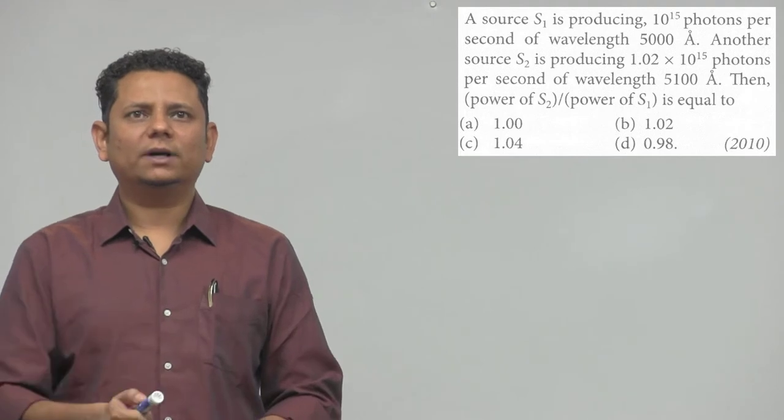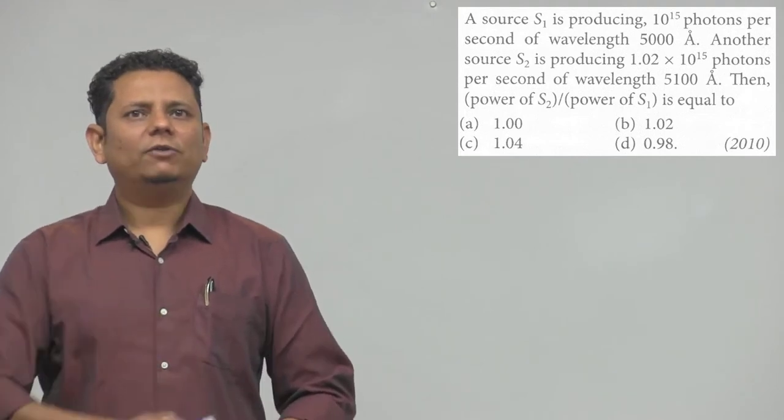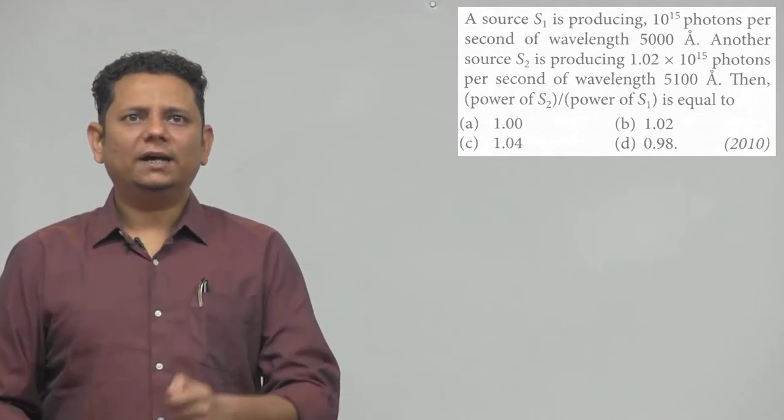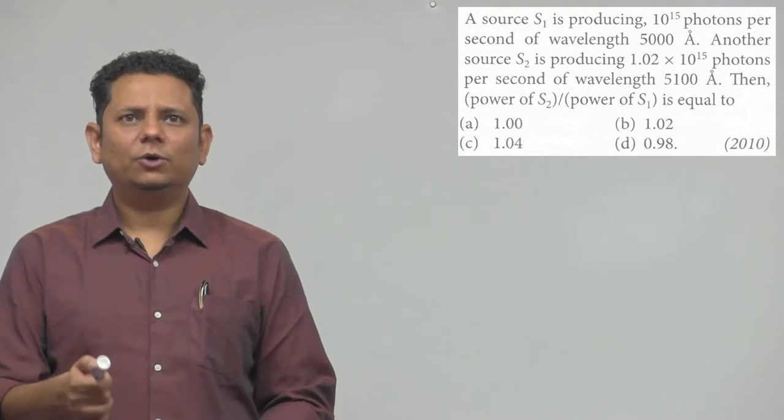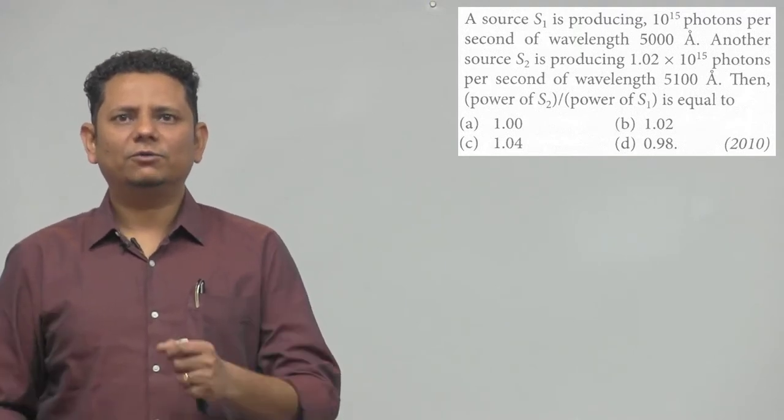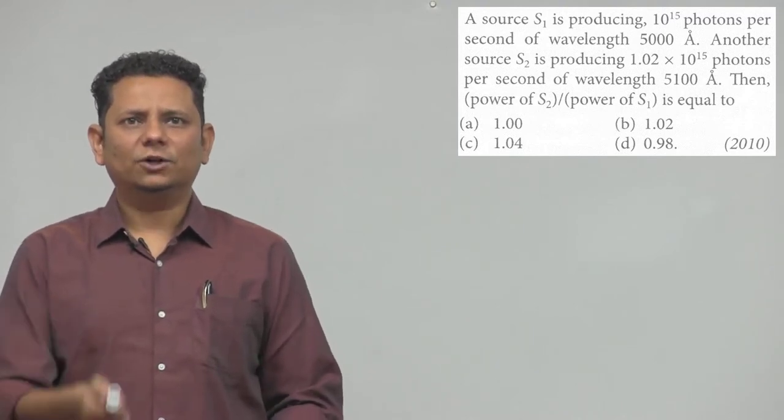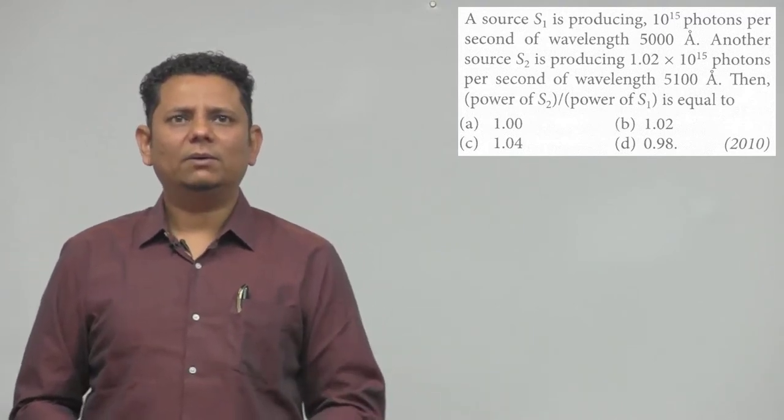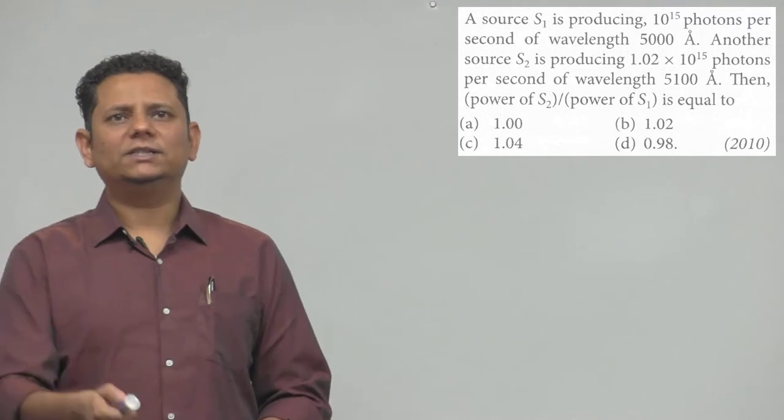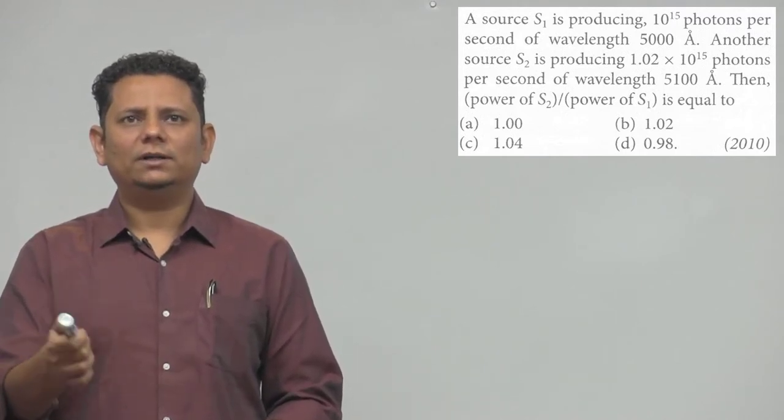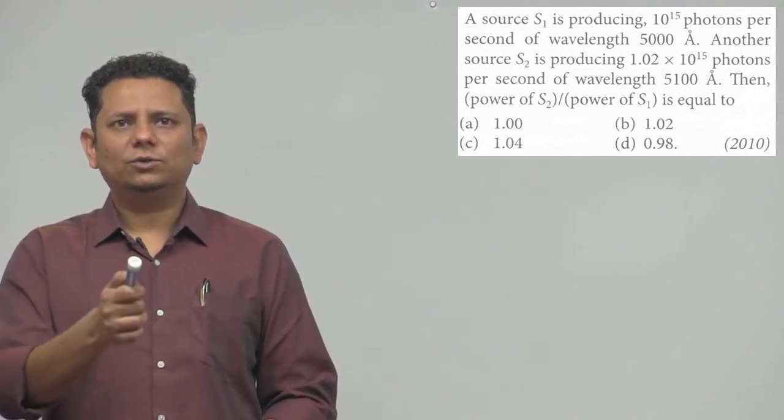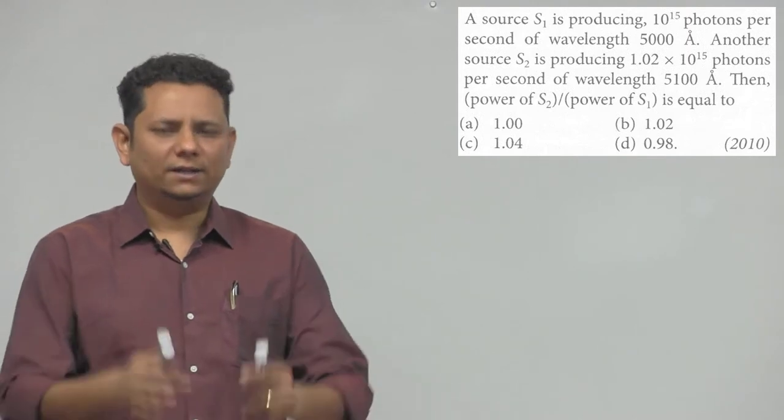Next question: A source S1 is producing 10^15 photons per second of wavelength 5000 angstrom. Another source S2 is producing 1.02 × 10^15 photons per second of wavelength 5100 angstrom. Then, the power of S2 divided by S1 is equal to: option A is 1.00, B is 1.02, C is 1.04, or D is 0.98.